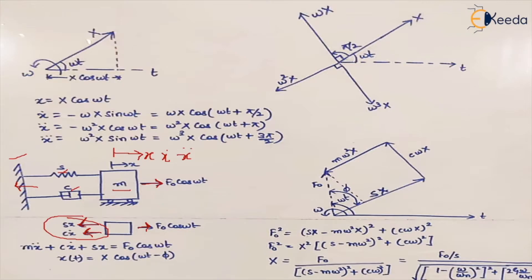To use the graphical approach, we make use of vector diagrams. We say that displacement is x cos(ωt). We know that whatever the harmonic function for force, displacement also occurs at the same frequency, so it becomes x cos(ωt) if there is no phase lag. If there is a phase lag the formula becomes x cos(ωt − φ). Initially we proceed without any phase lag.